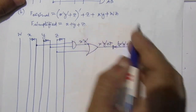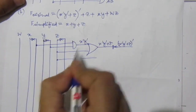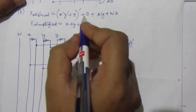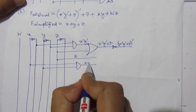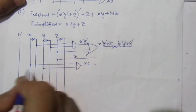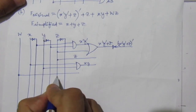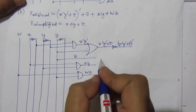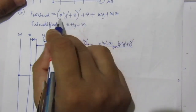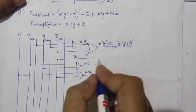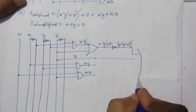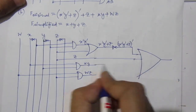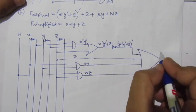Then plus z plus x·y: z is this line, and for x·y, x and y are these lines — use an AND gate to get x·y. Then w·z: w is this line and z is this line, use an AND gate to get w·z. We have four terms in total. Use an OR gate with all four inputs to get f original.